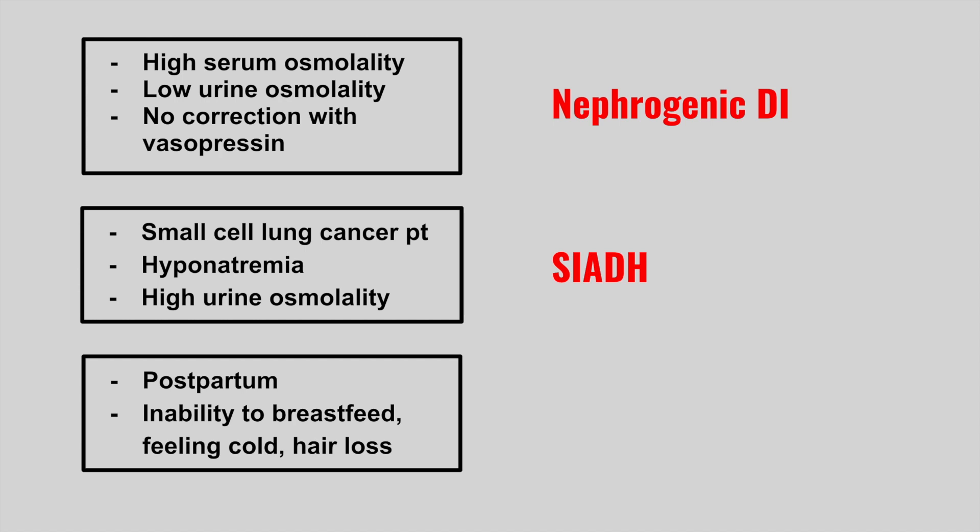The next patient is postpartum and develops an inability to breastfeed, feeling cold, and has hair loss. This is Sheehan syndrome. It occurs due to a pituitary infarction after bleeding during childbirth.